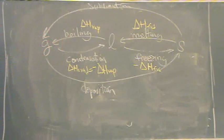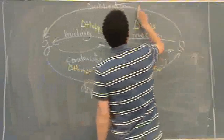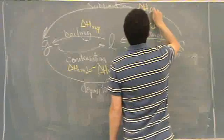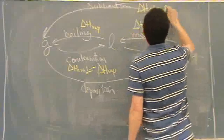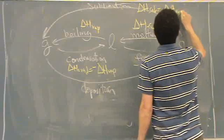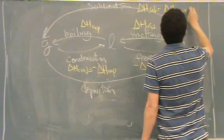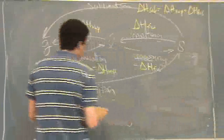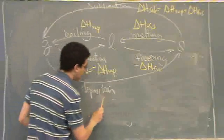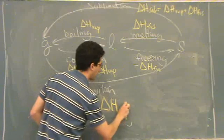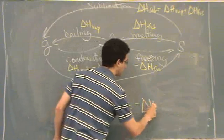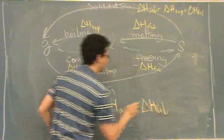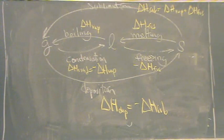Because it's the opposite. When you get to sublimation, delta H sublimation equals delta H vaporization plus delta H fusion. And then delta H of deposition equals negative delta H of sublimation.